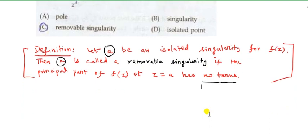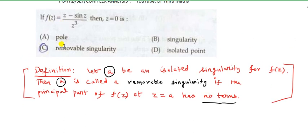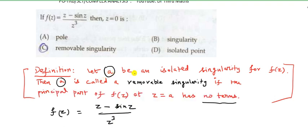Now we look at f of z equal to z minus sin z divided by z cube, with a equal to 0.